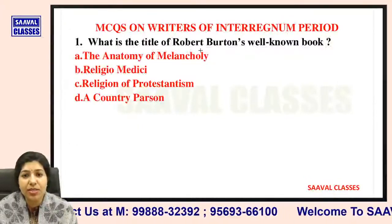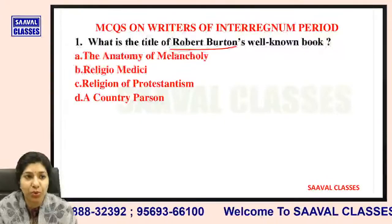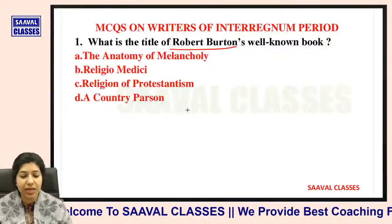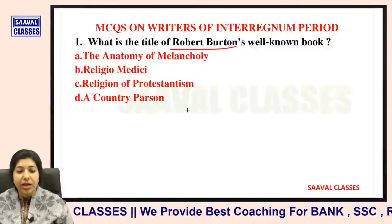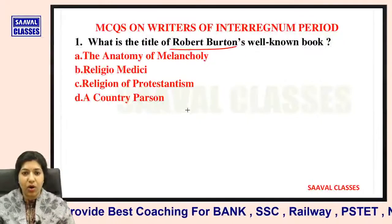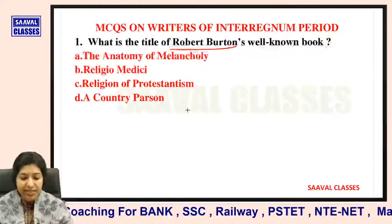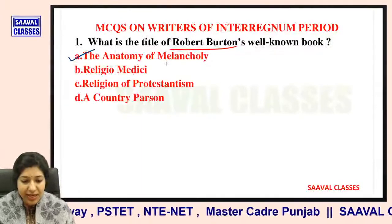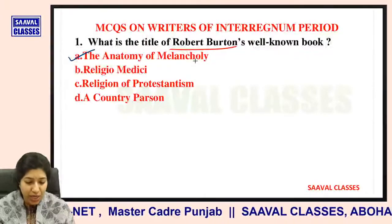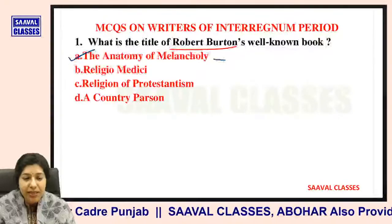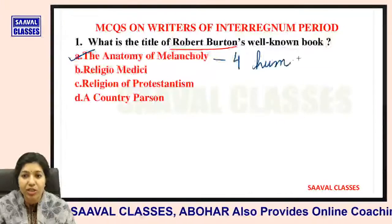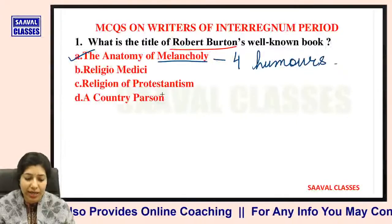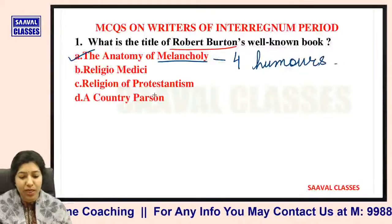Question number one: What is the title of Robert Burton's well-known book? Robert Burton ki sabse famous book ka naam kya hai? The Anatomy of Melancholy, Religio Medici, Religion of Protestantism, or A Country Parson? The answer is The Anatomy of Melancholy. It is Robert Burton's very famous book, where the four humours are analyzed, with the main focus on Melancholy.